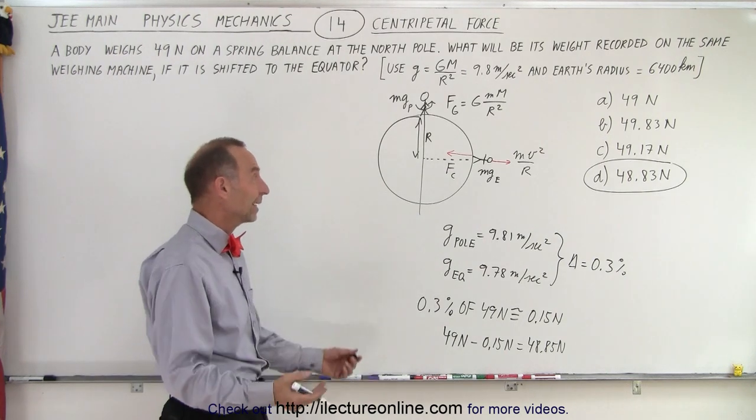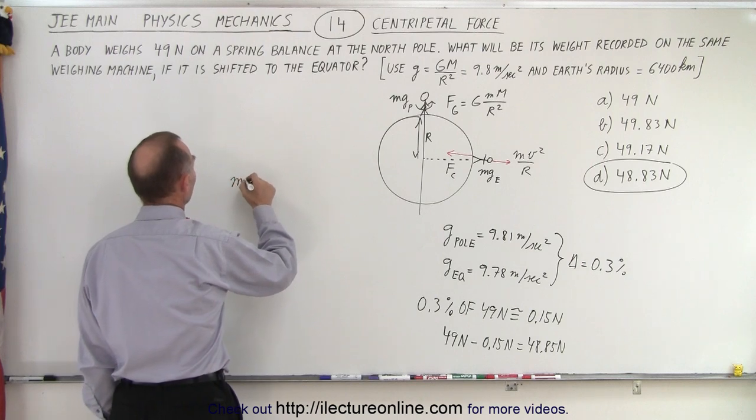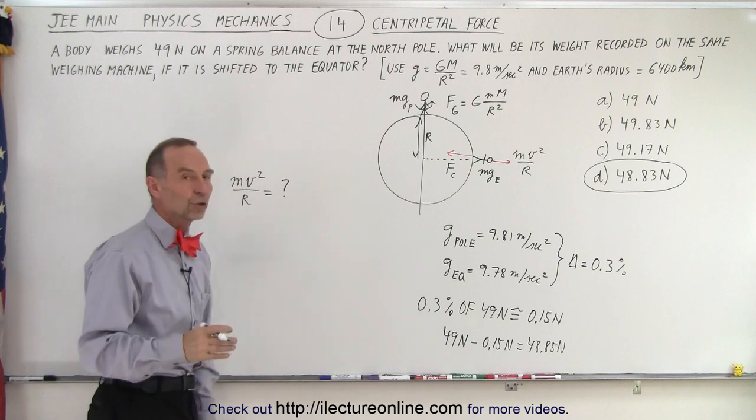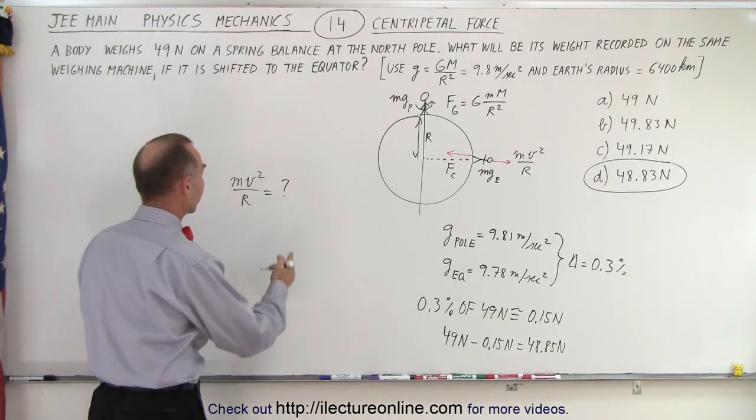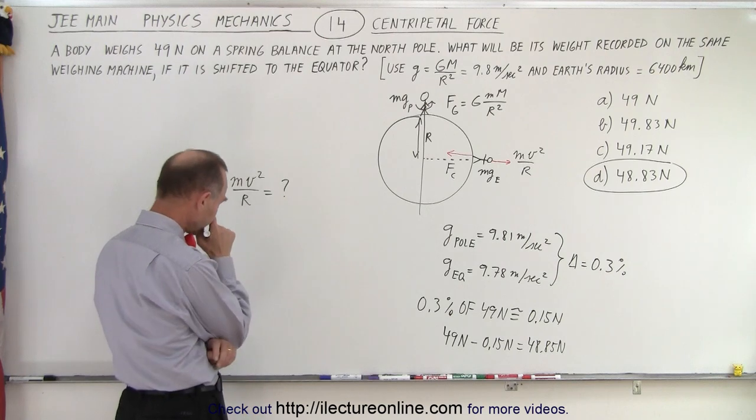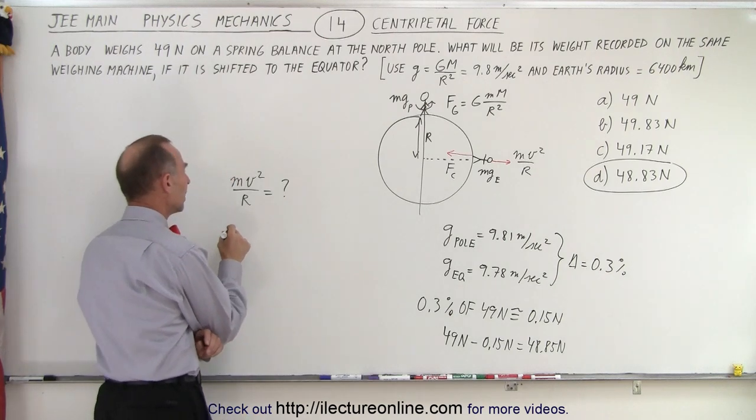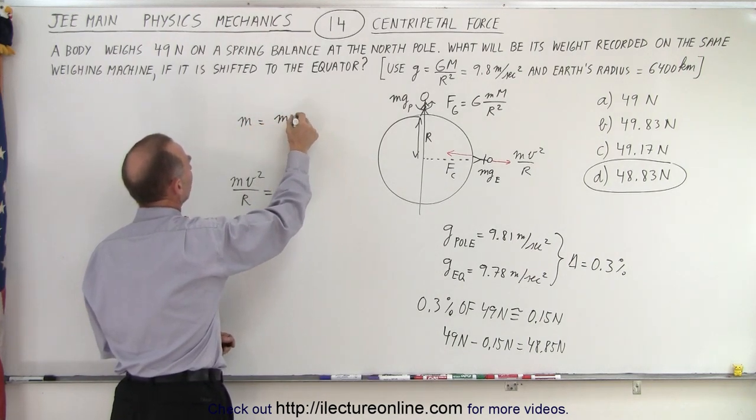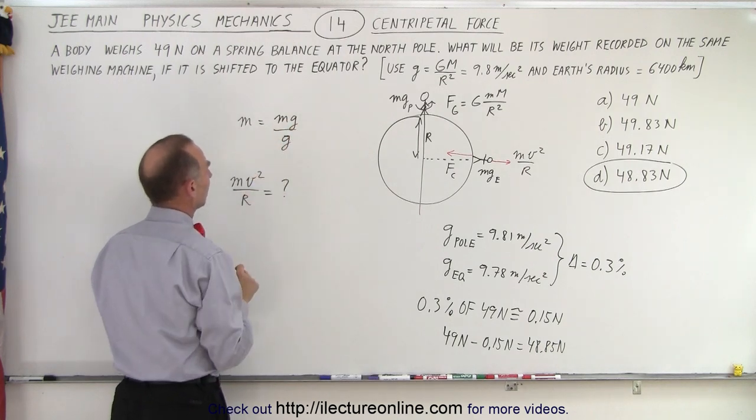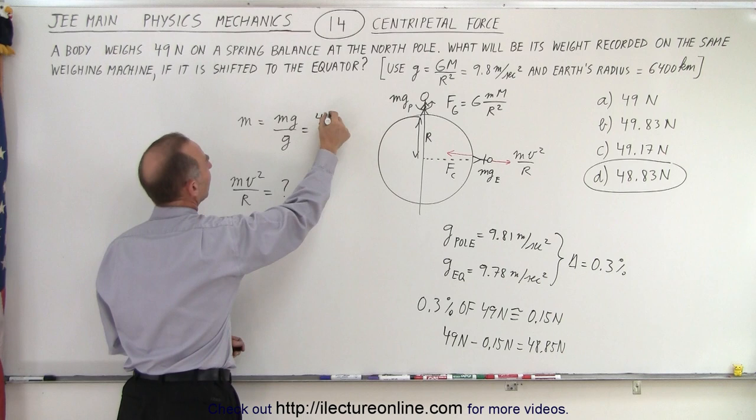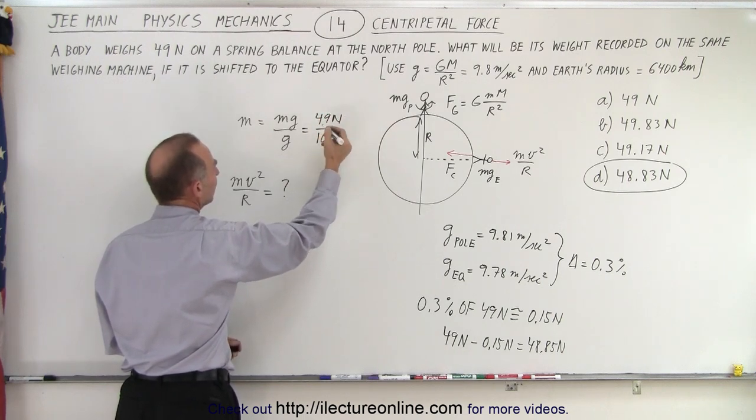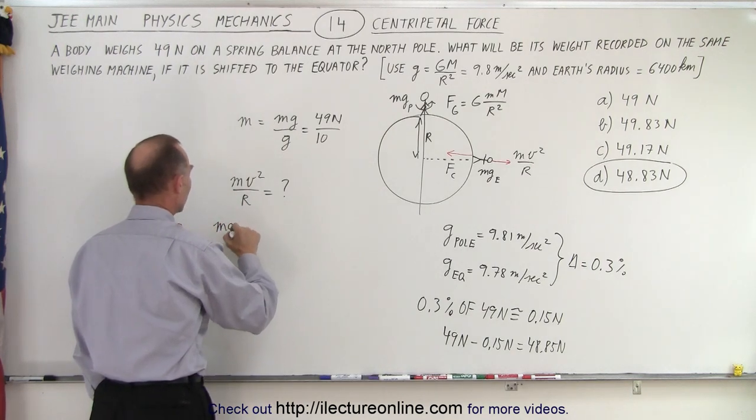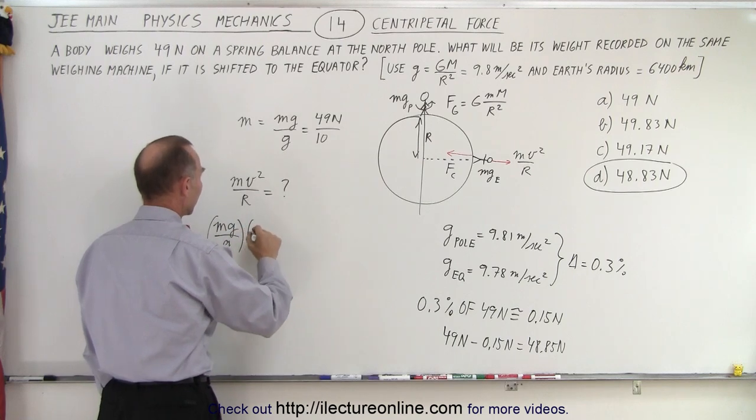If all else fails, and you need to calculate what that is, then you can simply say, well, mv squared over r is equal to question mark. What is that reduction in weight due to being at the equator? And of course, it would be equal to this, mv squared over r. The mass, that would be the mass of you. So we have m is equal to mg divided by g. So in this case, since we know what mg is, it's 49 newtons, and g is, let's say, 10 meters per second squared, because we're going to simplify things. Then we can simply write m as mg divided by g times v squared.